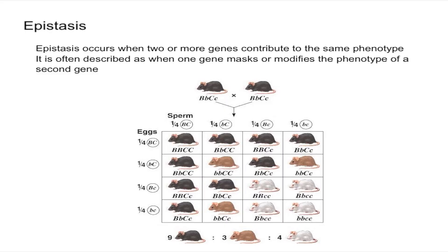Typically for a normal dihybrid cross you would expect a 9 to 3 to 3 to 1 ratio, but as you can see it's clearly not a 9 to 3 to 3 to 1 phenotype ratio. You have nine gray mice, three brown mice, and then four white mice — so it's a 9 to 3 to 4 ratio.